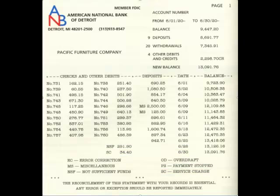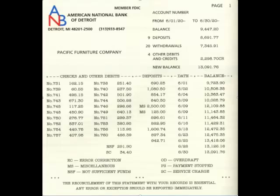The amounts listed on this bank statement are the amounts that the bank recorded the transactions for. For example, check number 741 in the amount of $495.15 — if on your books it should have been $945 instead of $495, that is a mistake that has to be dealt with on the bank reconciliation and potentially elsewhere. This is simply telling you what the bank has recorded these transactions for. Hopefully this is helpful in understanding the bank statement and how it works, and that concludes this video.